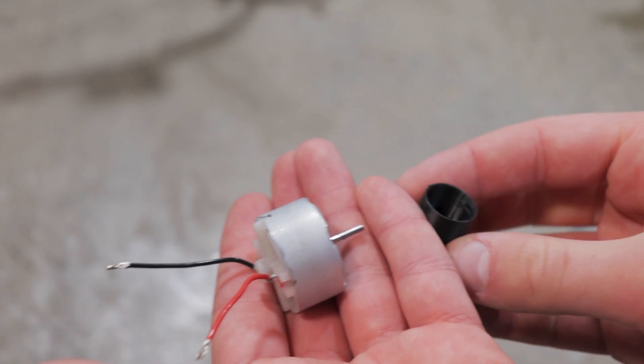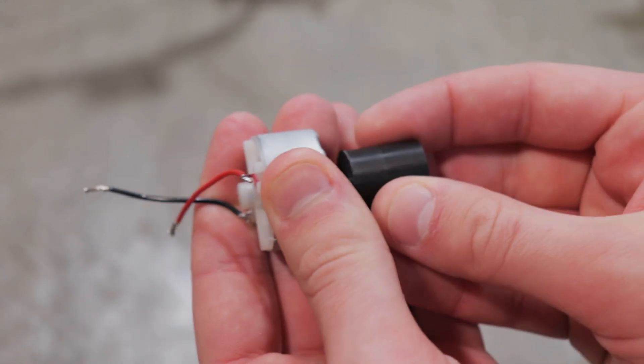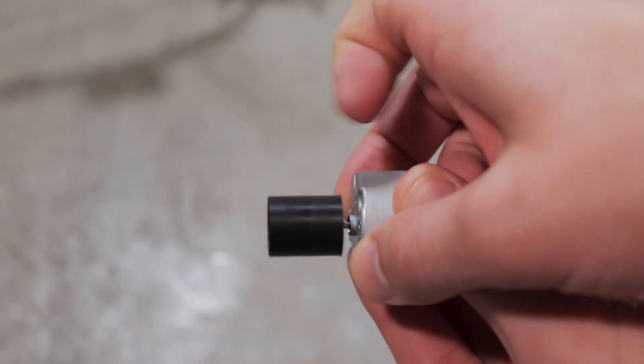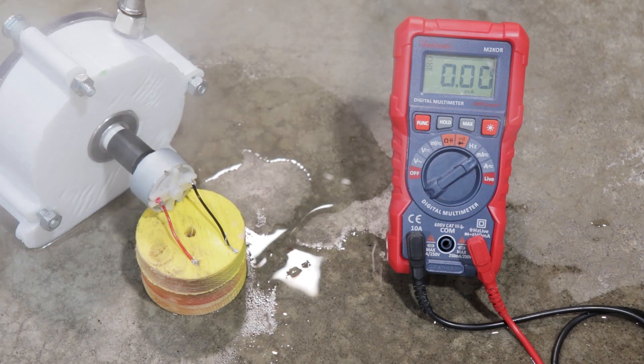The next question is, can we generate some electricity? So I got a small DC motor and hooked up a coupling to it. However, it appears there is some wobble, which will lead to some shaking issues later.